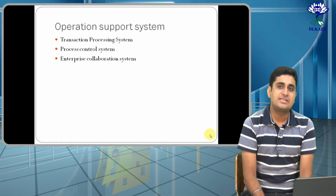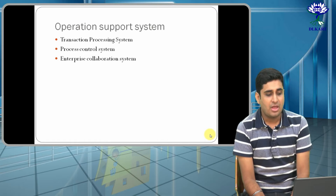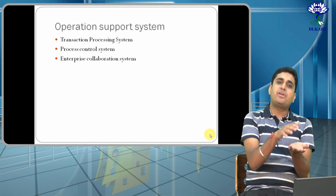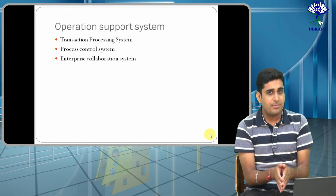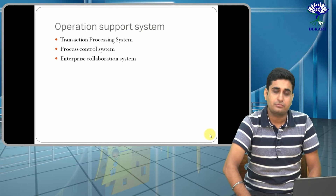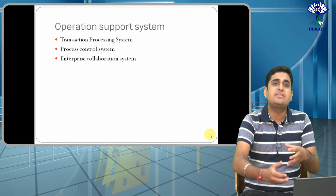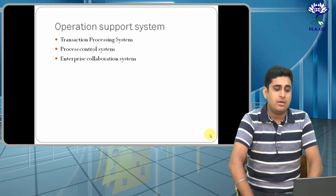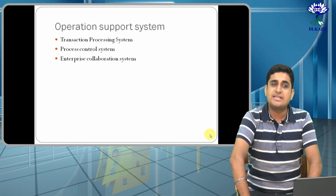The three subcategories of Operation Support System are: Transaction Processing, Process Control, and Enterprise Collaboration. Operation Support System operates at the operational or supervisory level — where actual operations are happening, where employees of the company are working. At this level, the Transaction Processing System takes account of all the transactions happening inside the company.